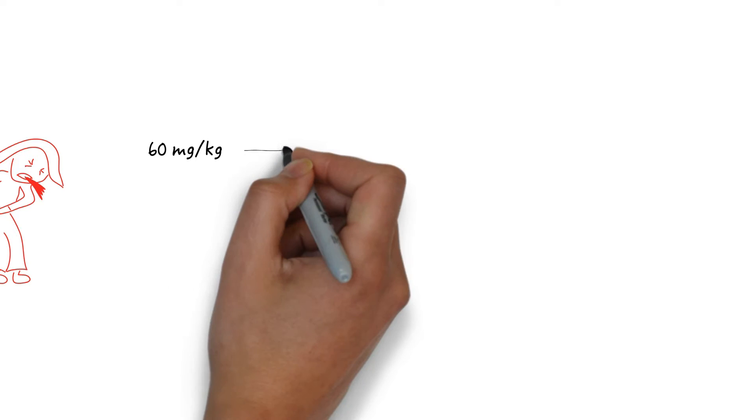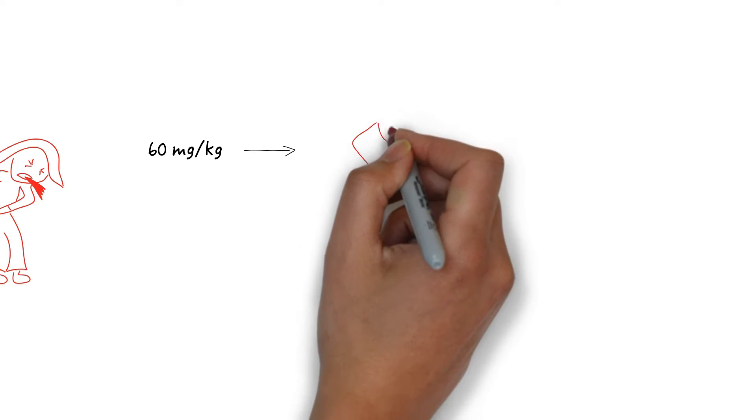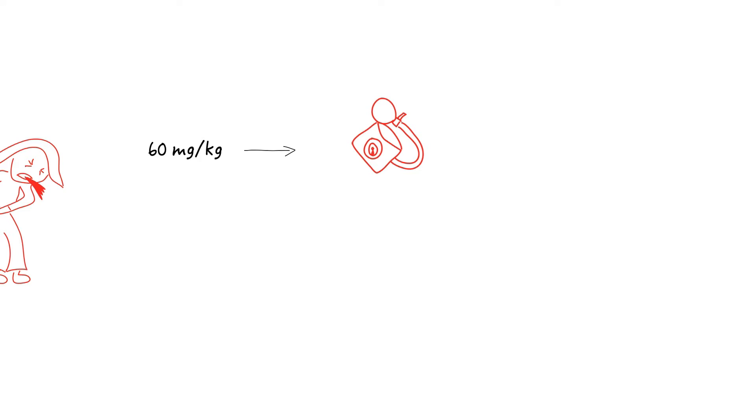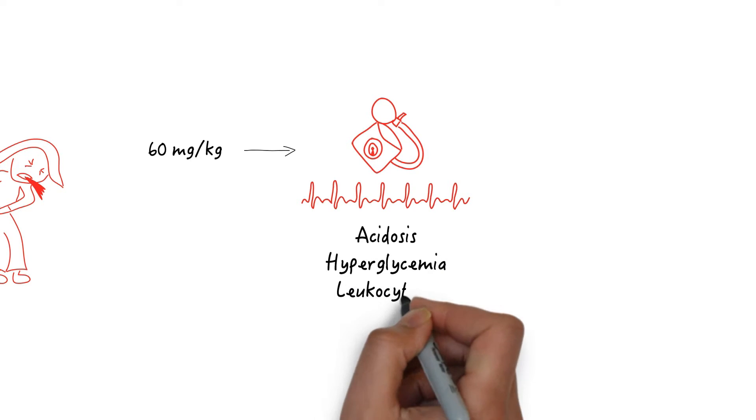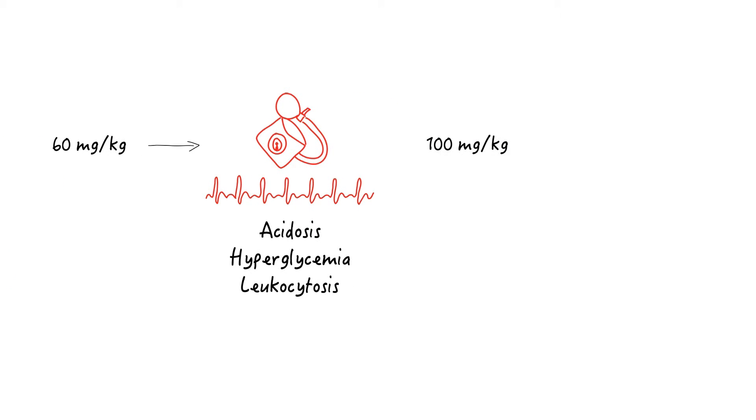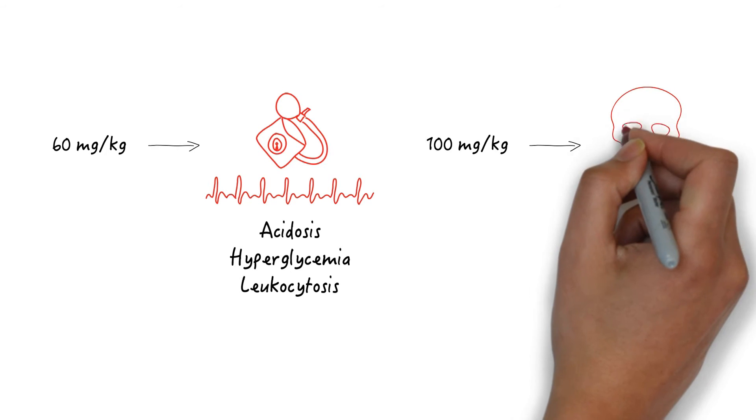A dose of 60 milligrams per kilogram can cause more serious effects like hypotension, tachycardia, anion gap acidosis, hyperglycemia, and leukocytosis. A dose of 100 milligrams per kilogram can be lethal.